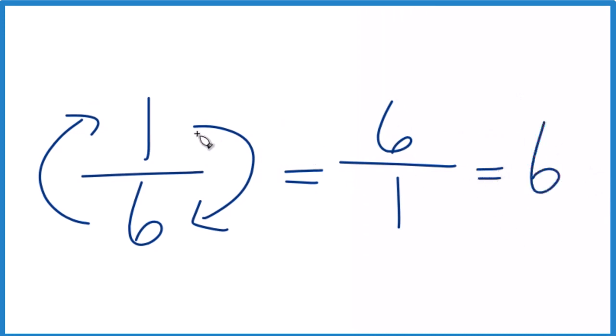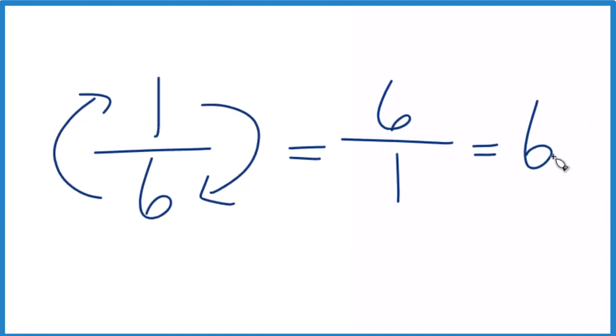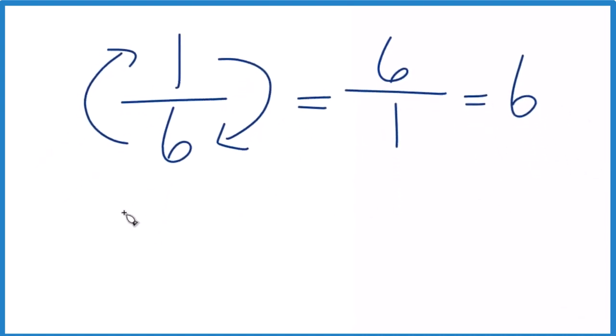So we can say that the reciprocal for one-sixth is six, and we can check that. You could take one-sixth and multiply it by its reciprocal, six over one.